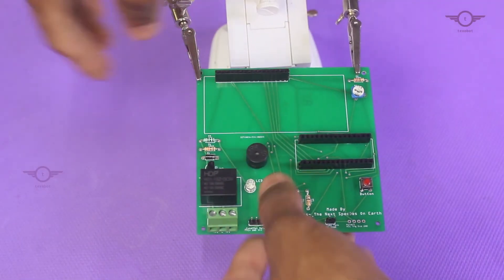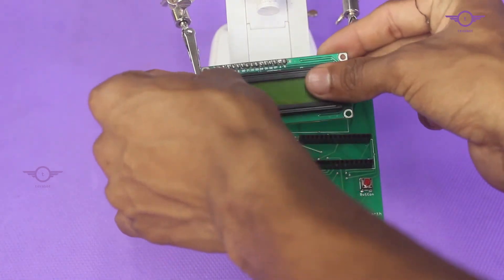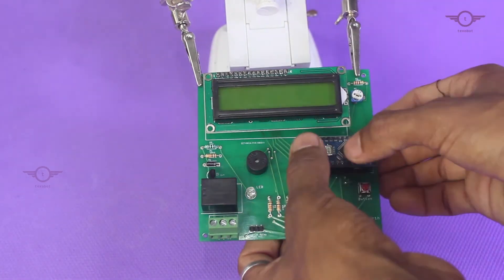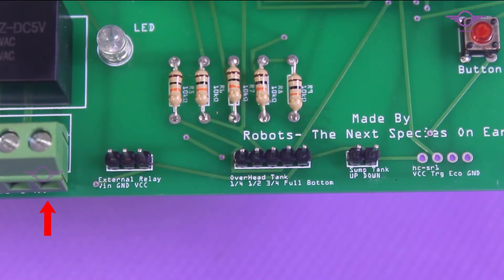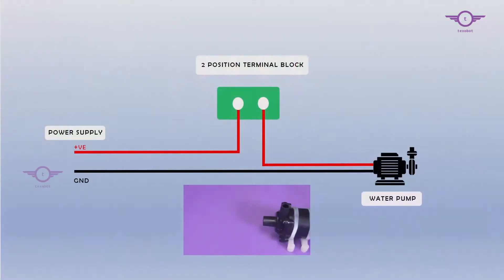We are going to assemble the project as shown in the diagram. Please refer to the sequence shown in this video while assembling the components together. For the demo purpose, we are using a 12V DC water pump.